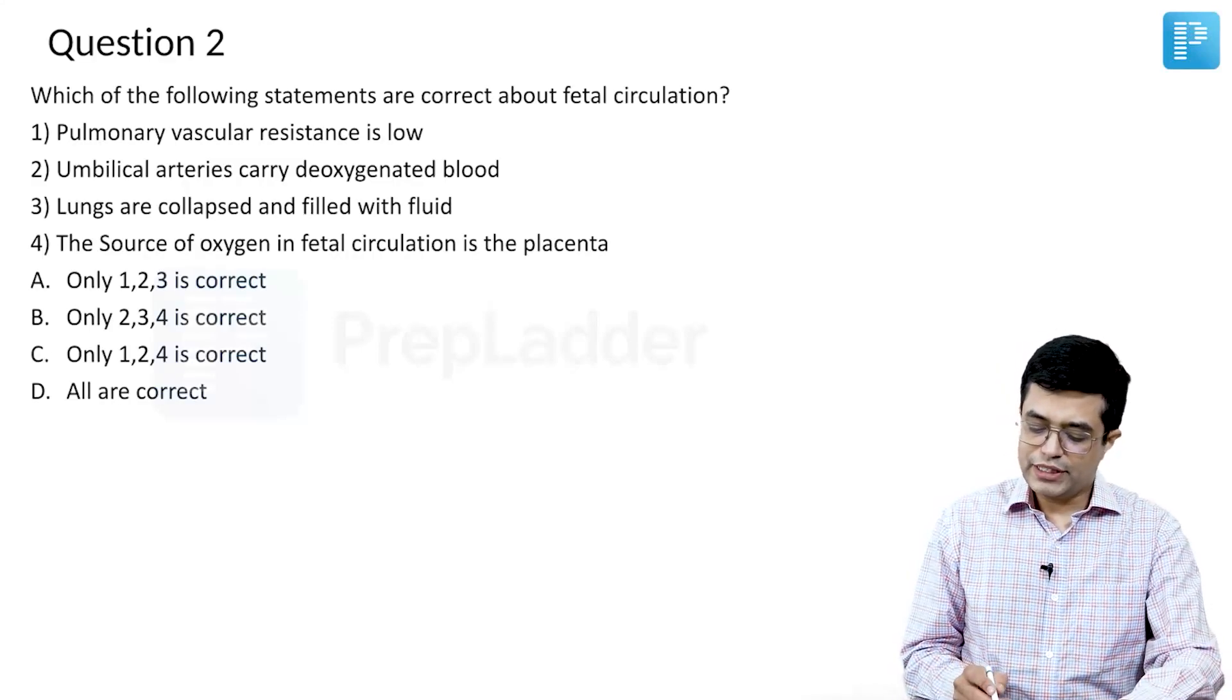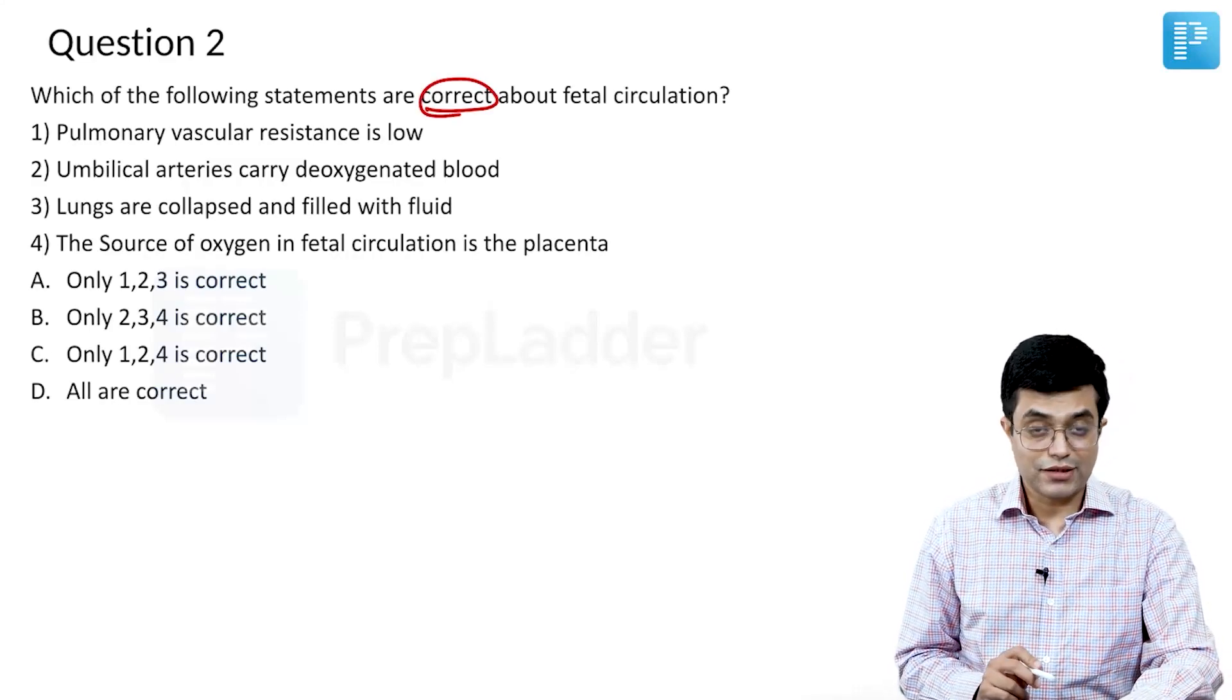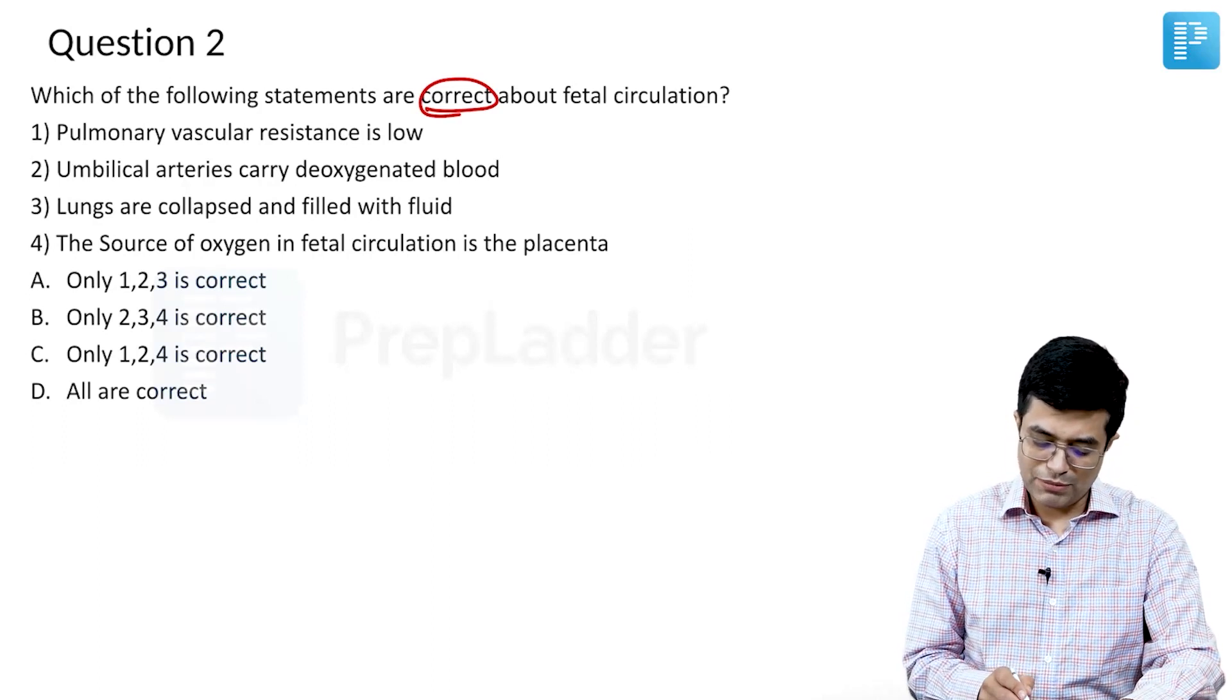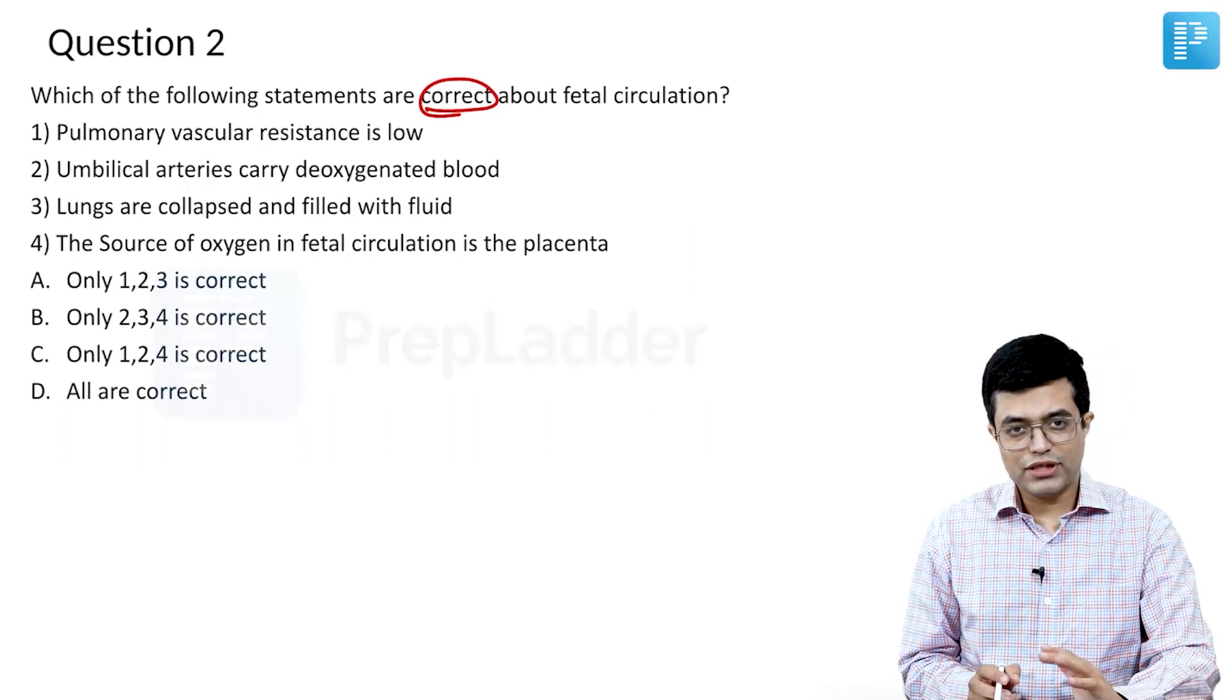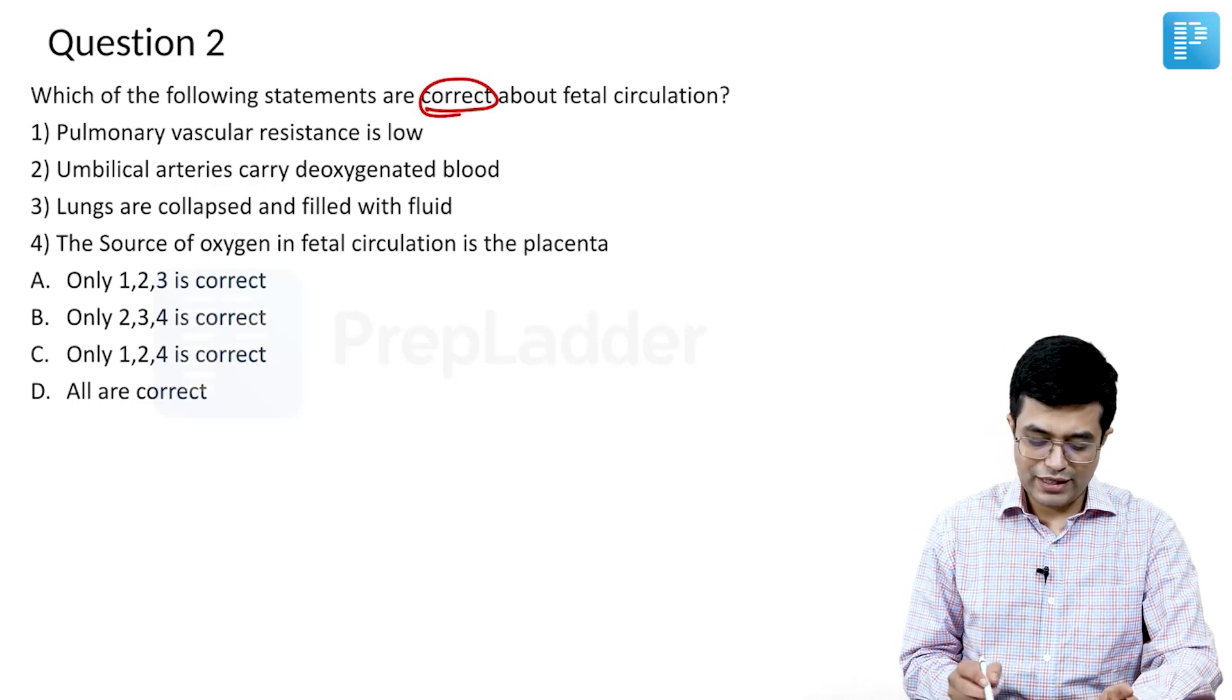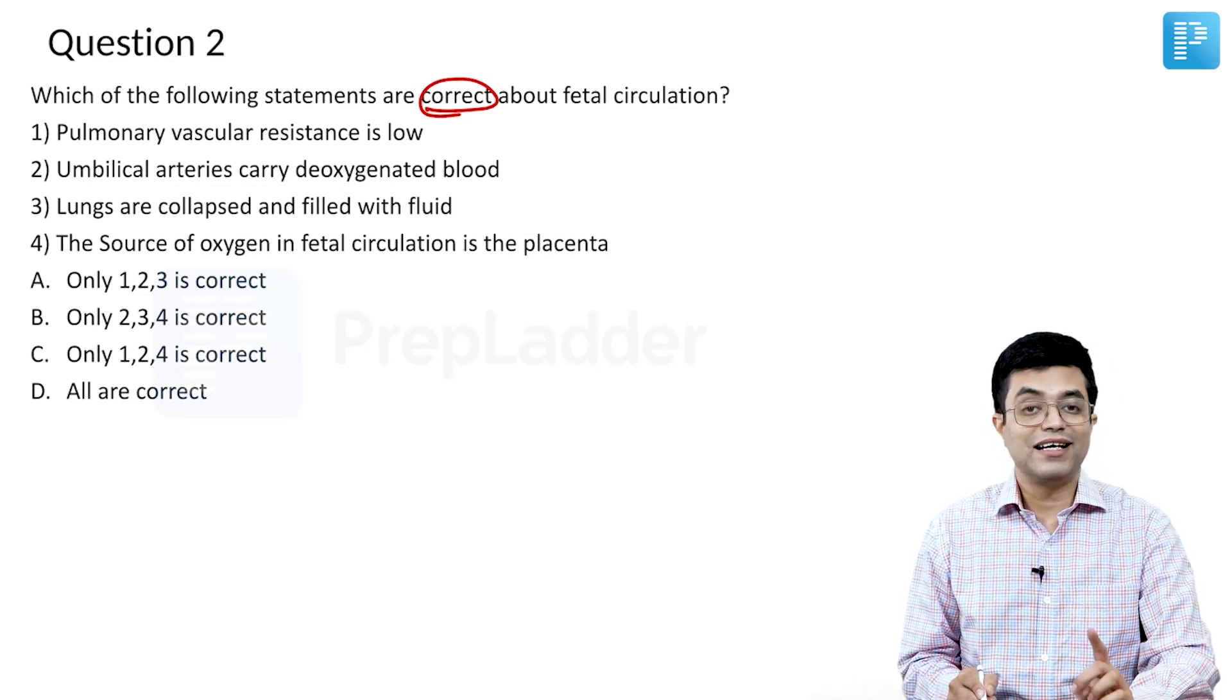Moving to question number two, which of the following statements are correct about fetal circulation? Let us look at options one by one. Pulmonary vascular resistance is low. It is low in the postnatal age but in fetal life pulmonary vascular resistance is high.